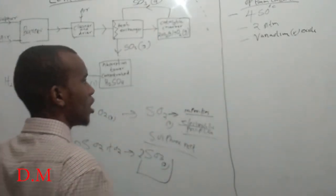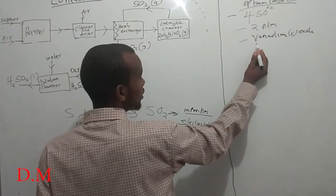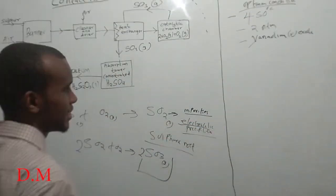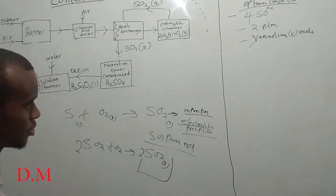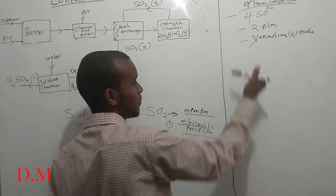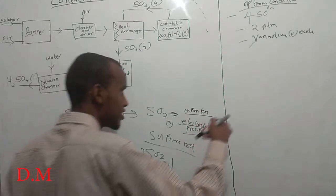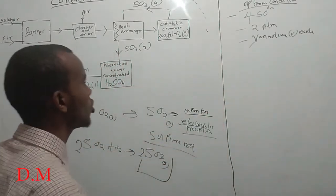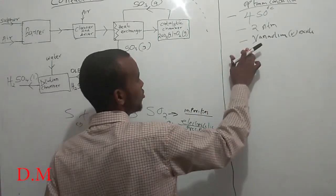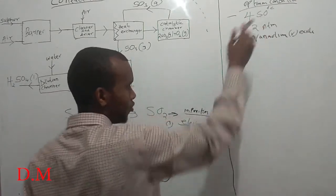Instead of vanadium pentoxide, we might use platinum asbestos as the catalyst. However, platinum asbestos is expensive and can easily be poisoned, which is why we prefer vanadium pentoxide.